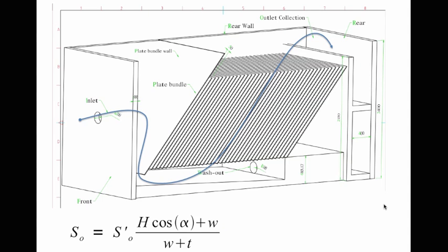The dimensions of the plate bundle are calculated using a geometric principle called Hazen's Law. So if I set the height of the plate bundle, its angle, and the thickness of the plates, and I choose the distance I want between the inclined plates, I can calculate the settling rate of the particles and therefore the area of the plate bundle.